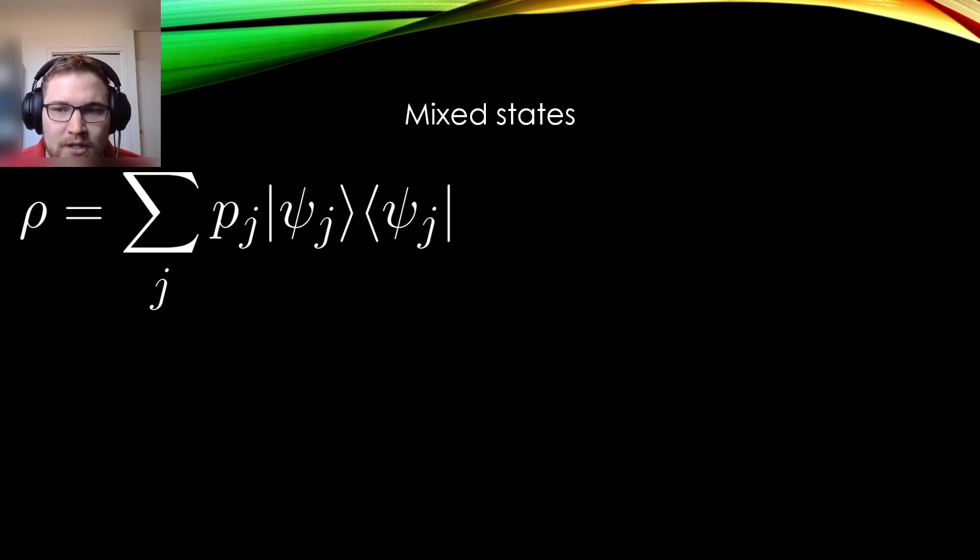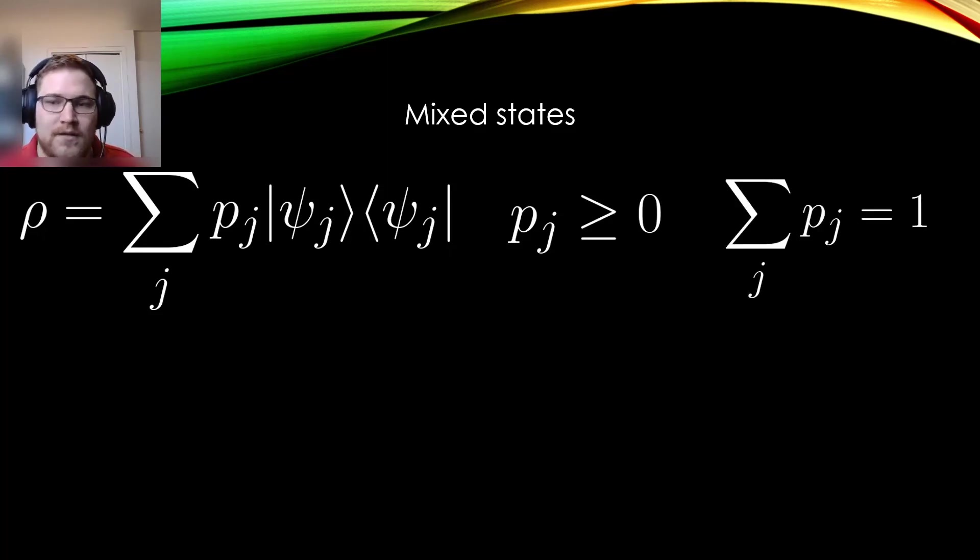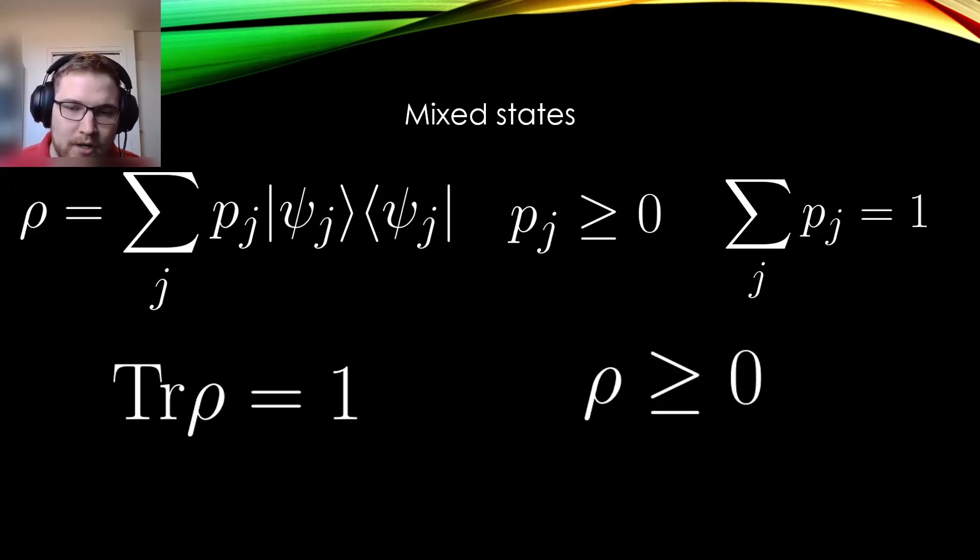The ensemble is written as a sum of pure states with probabilities PJ, and of course the probabilities are greater than 0, and they sum to 1. Mixed states are also trace 1 and are positive operators. Showing this is essentially identical to the pure state case, and the dynamics and the expectation values work in an identical way as well.